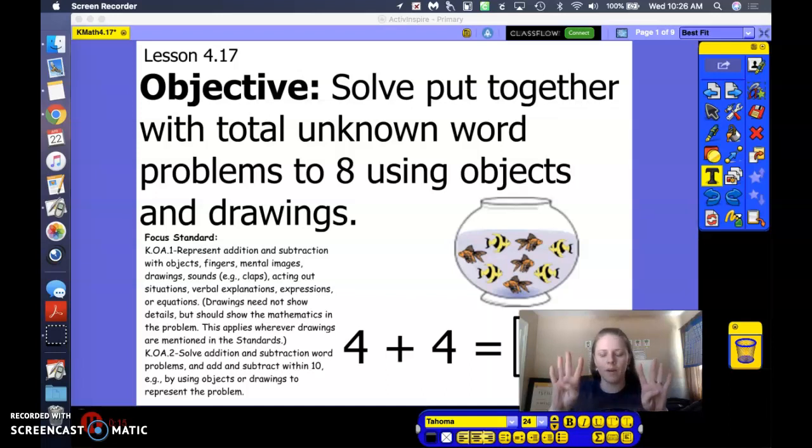4 and 4 makes 8, 6 and 2 makes 8, 7 and 1 makes 8, 8 and 0 makes 8. There's lots of different combinations and every time those numbers get together, they make 8.